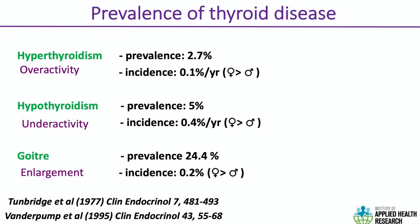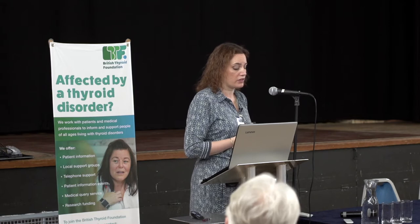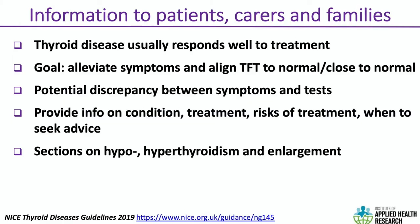Thyroid diseases are common. Hyperthyroidism affects about 3% of women in the UK. Both hyper- and hypothyroidism are generally caused by autoimmune conditions and are ten times more common in women than in men. Goitre — a non-specific term for an enlarged thyroid gland — affects about 25% of people. Thyroid nodules are even more prevalent; probably about 50% of people have a thyroid nodule.